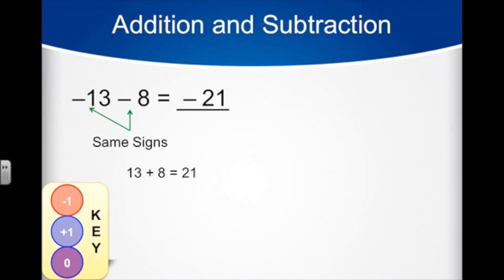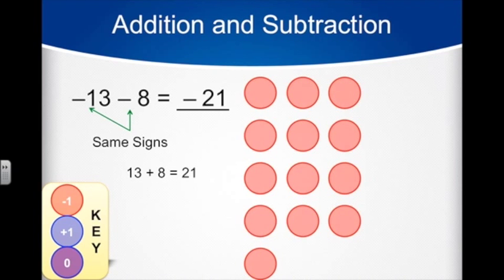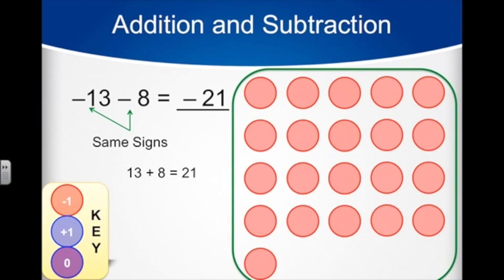Using this, we can see the problem as 13 red disks, or negative 1s, combined with 8 negative 1s. Nothing here cancels out, so we can just count up all the disks and see that we have 21 negative 1s. So our answer is negative 21, like we said.